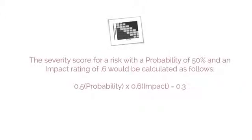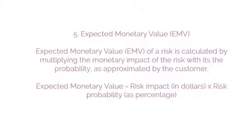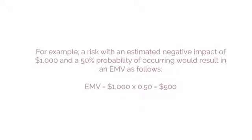For example, the severity score for a risk with a probability of 50% and an impact rating of 0.6 would be calculated as: 0.5 × 0.6 = 0.3. The fifth technique is Expected Monetary Value (EMV). EMV is calculated by multiplying the monetary impact of the risk by its probability as approximated by the customer. The formula is: EMV = risk impact (in dollars) × risk probability (as a percentage). For example, a risk with an estimated negative impact of $1,000 and a 50% probability of occurring would result in an EMV of $1,000 × 0.50 = $500.